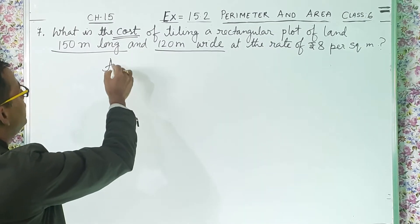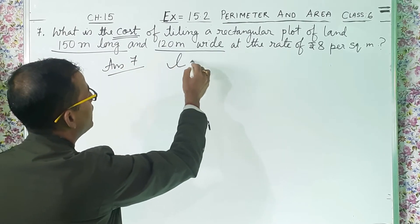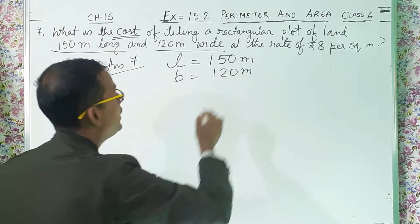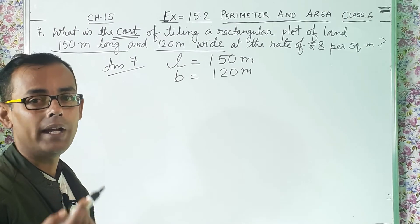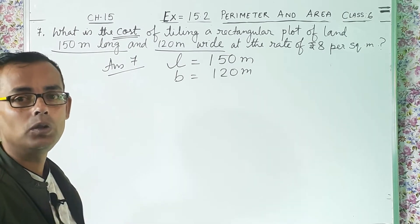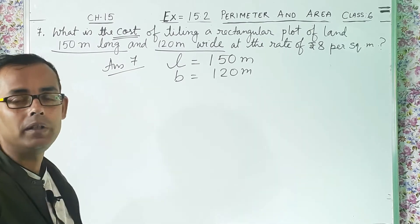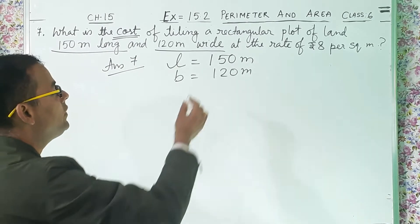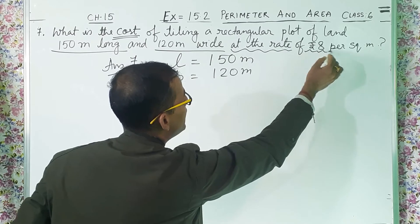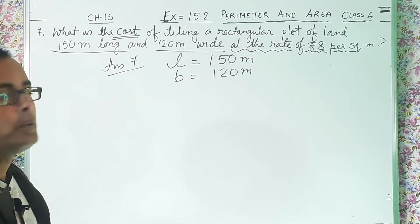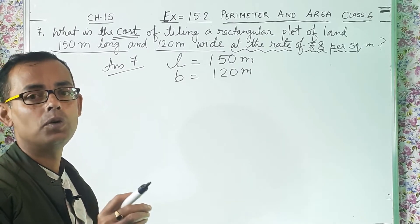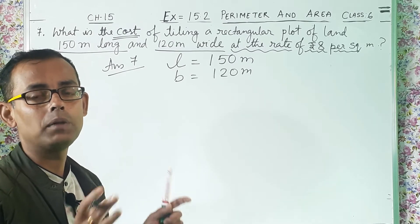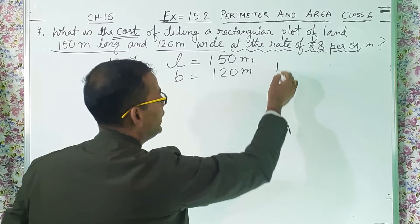So we will write answer 7. L equal to 150 meter and B equal to 120 meter. You can write: length of the rectangular plot of land equal to 150 meter, breadth of the rectangular plot of land equal to 120 meter. Now they are telling we have to find out the cost, and the rate is rupees 8 per square meter.